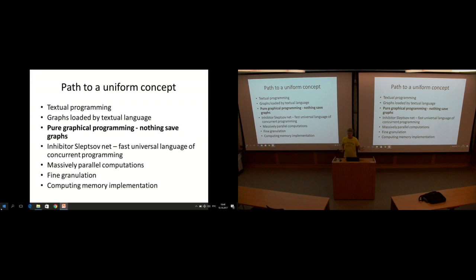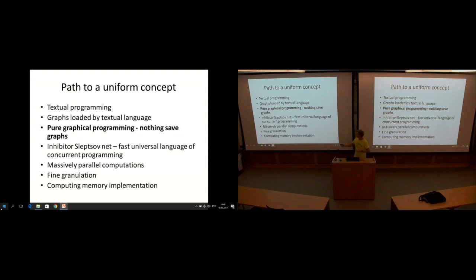For these purposes, a special kind of place-transition net offered by outstanding Ukrainian scientist Anatoliy Ilyich Slipcov was applied. Petri nets were known for years, but from the computational point of view they are very slow when it comes to computing arithmetic operations. In Slipcov nets, you can fire the same transition in multiple instances. Because of this you have a very fast language for concurrent programming which runs exponentially faster than a Petri net.